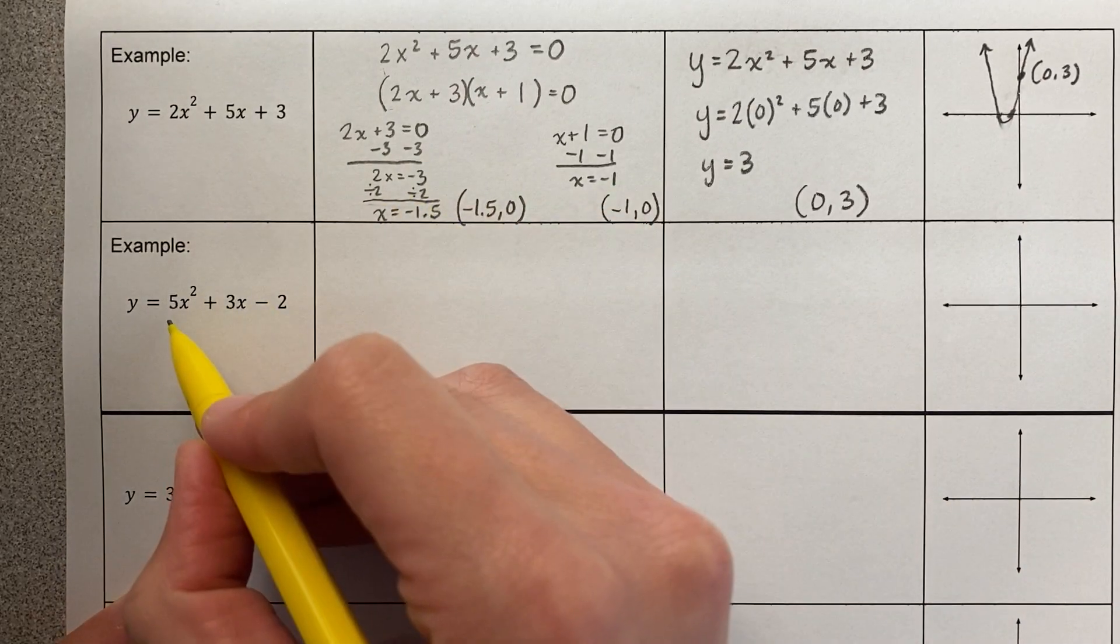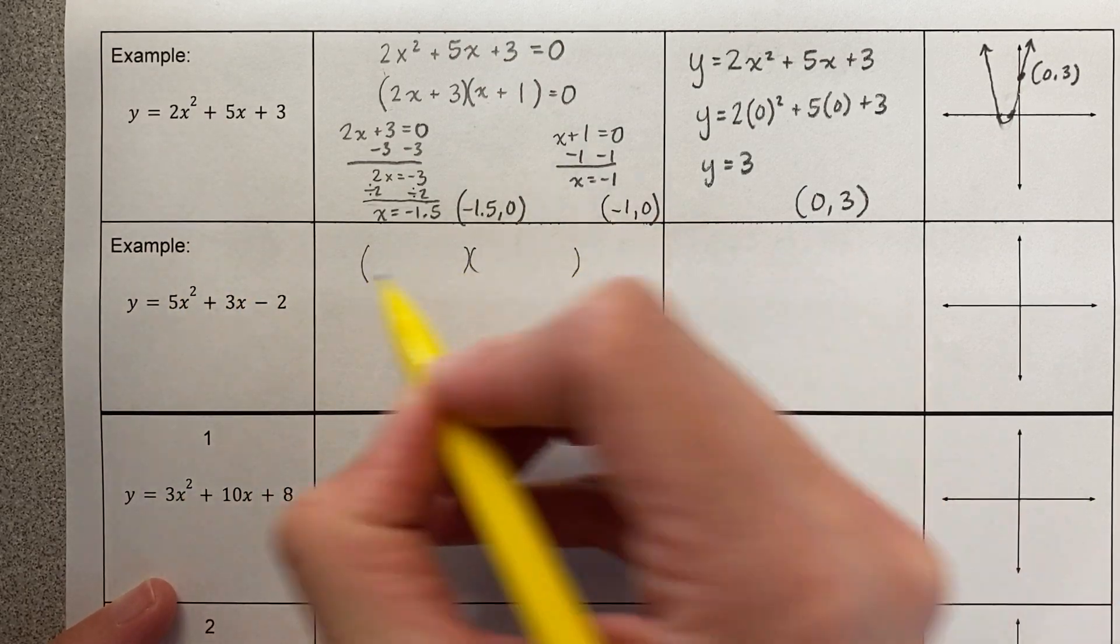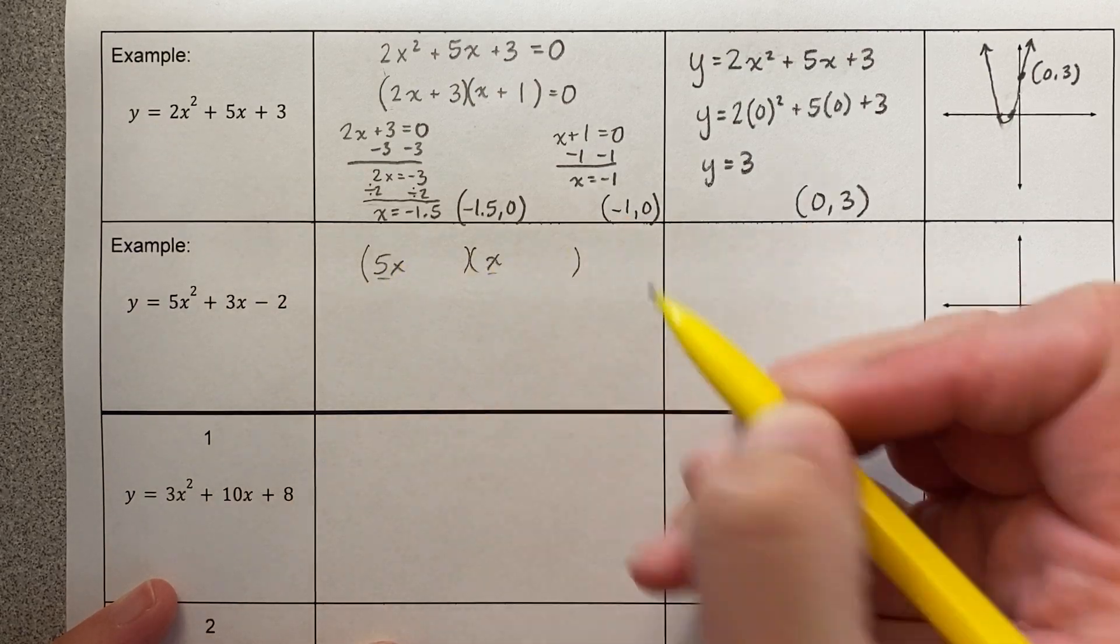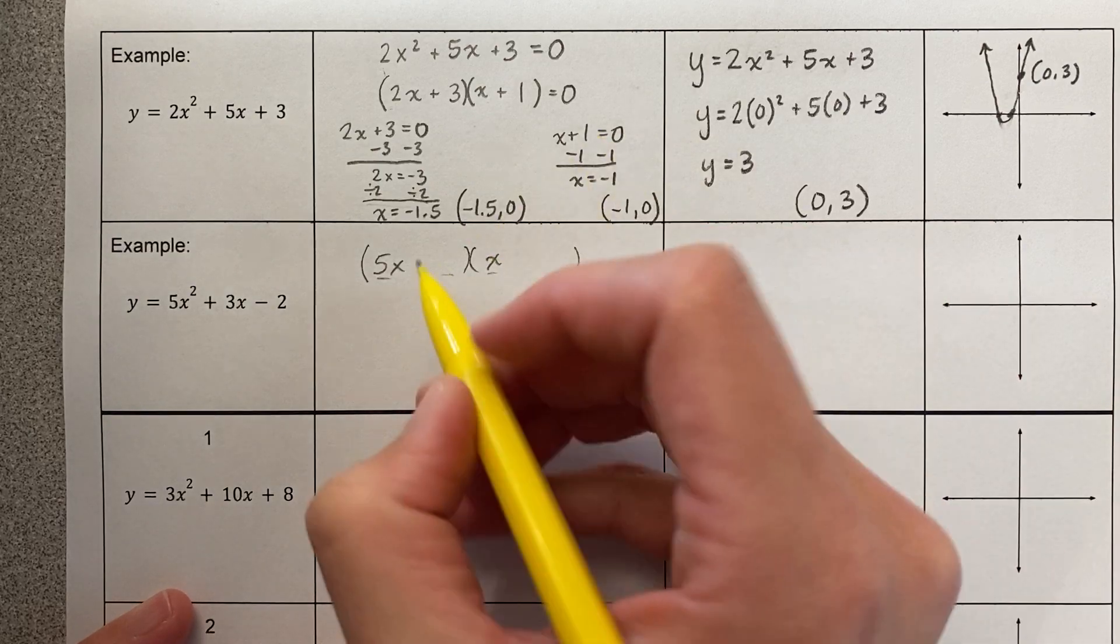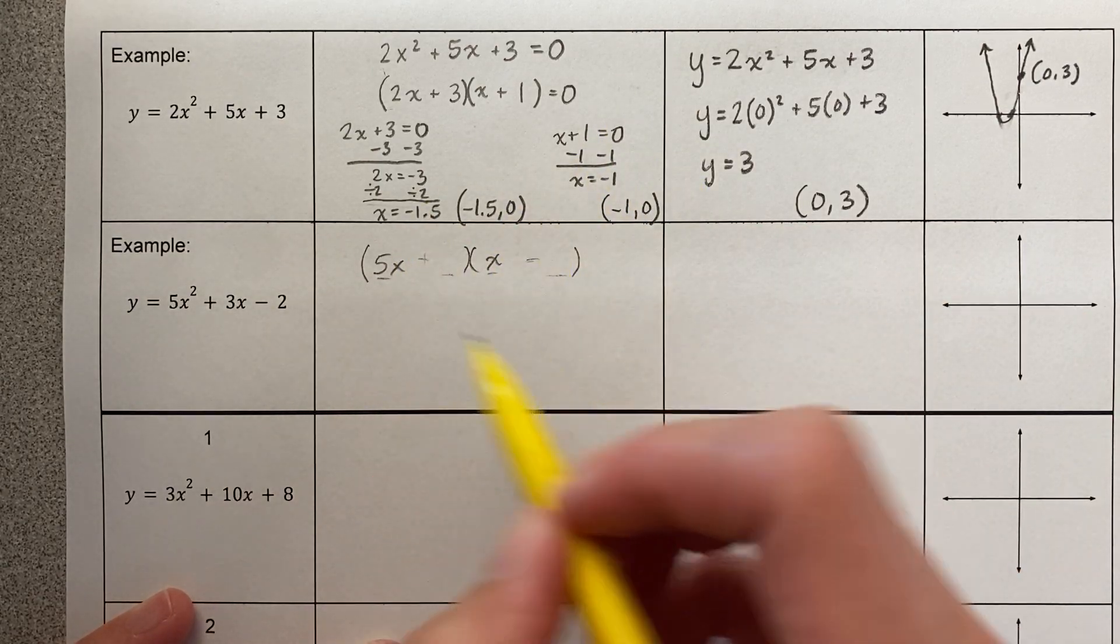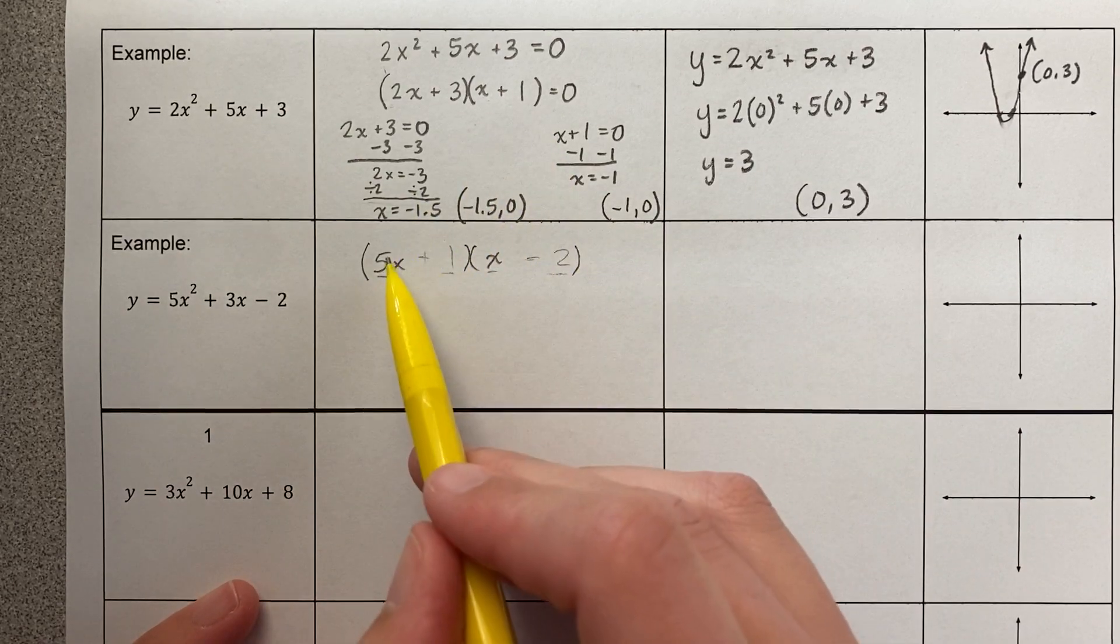But it's okay, we use a calculator if we're stressed and we don't worry about it. So I'm going to go ahead and factor this one. I know that this times this has to equal 5x squared, so that's going to be 5x times x. And then this times this has to equal negative 2, so one's going to be positive one's going to be negative. I'm going to have 2 and 1, so if I put it like this and let's just try it, this would be negative 10 plus 1, that would be negative 9.